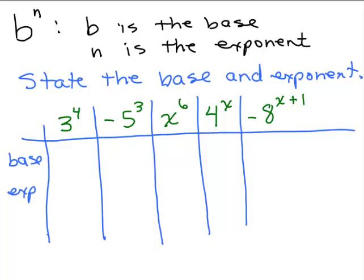Before looking at functions, let's just review what a base and an exponent is. If we have b to the n, b is called the base and n up here is called the exponent. The base is simply the number directly to the left and below the exponent. So for this first one, we have 3 to the fourth power. The base is 3 and the exponent is 4.